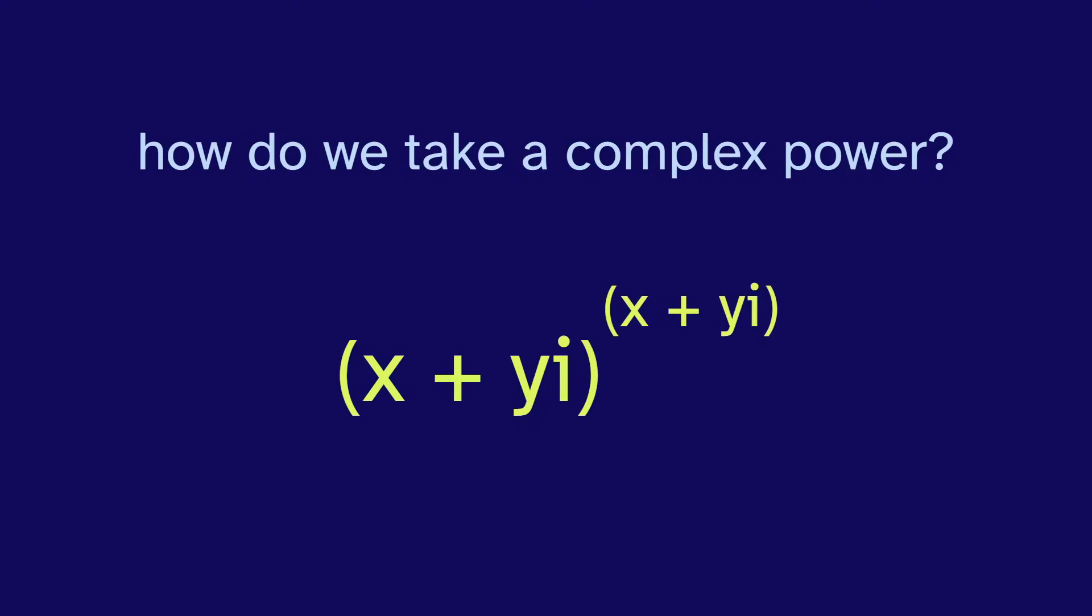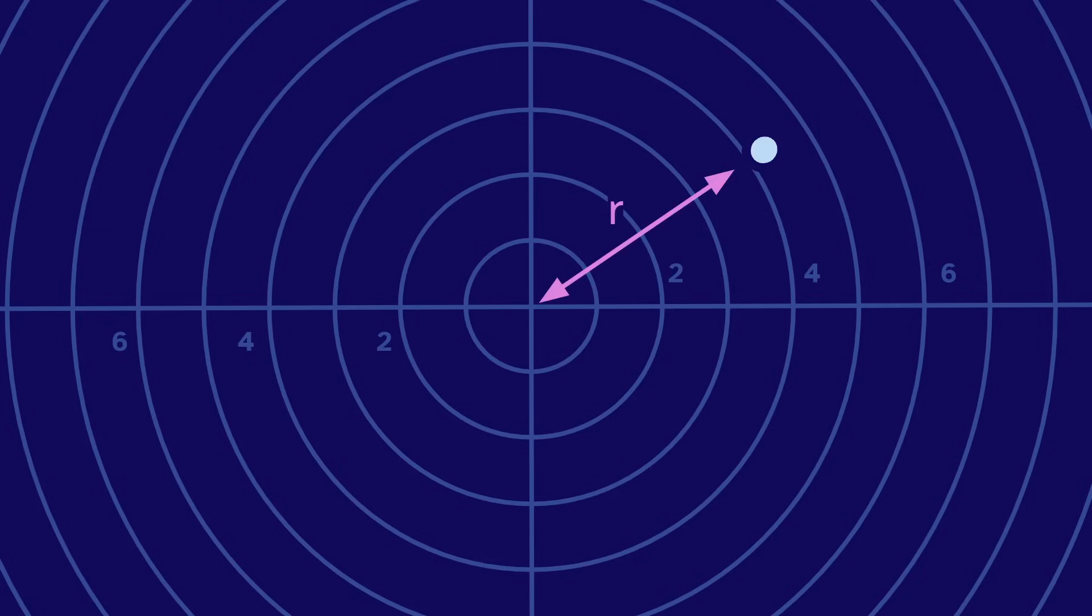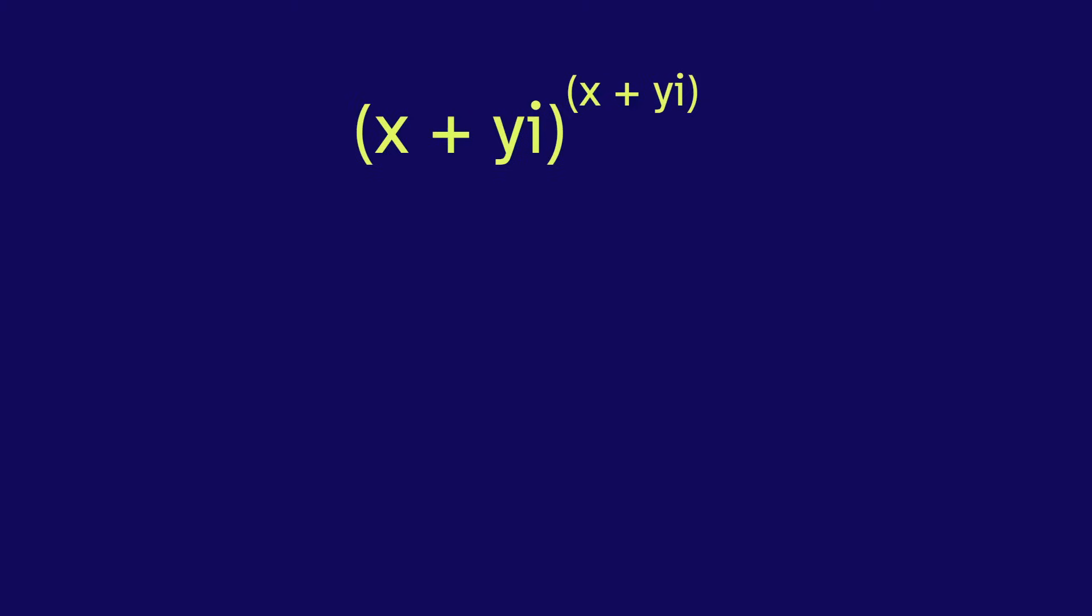It helps to write this number differently. Instead of using a grid with a horizontal x and a vertical y, we can use polar coordinates with a radius r and angle theta. The number is equal to r times e to the power of i theta. So going back to this problem, we can rewrite that base using polar coordinates. The radius of the circle is one, so that radius goes away.